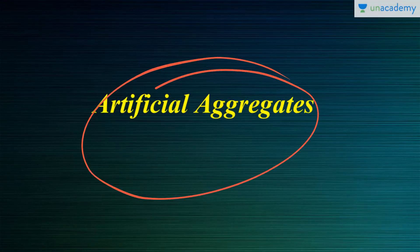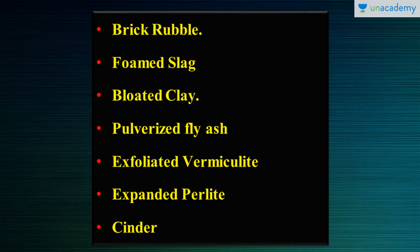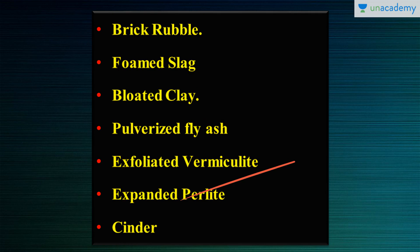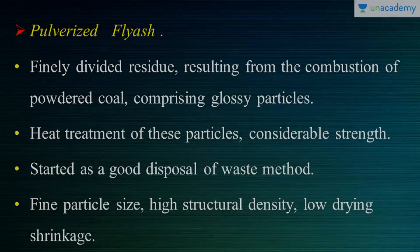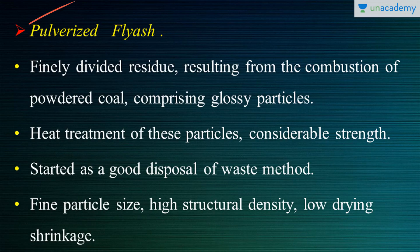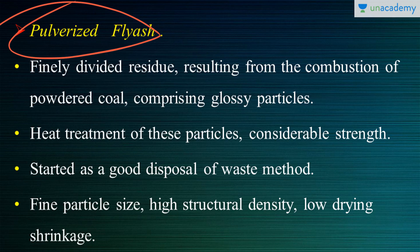Some of the artificial aggregates used include brick rubble, foam slag, bloated clay, pulverized fly ash, exfoliated vermiculite, expanded pearlite, and cinder. Today we are going to see about pulverized fly ash. Fly ash is one of the most important, famous, and recognized aggregates in the entire artificial aggregate segment.